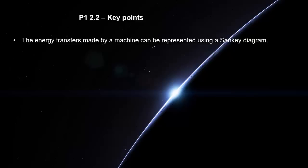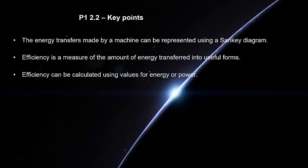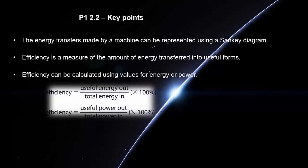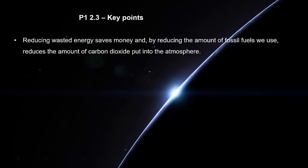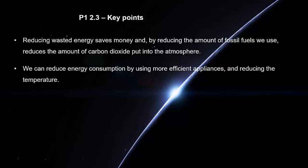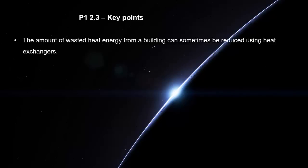The energy transfers made by a machine can be represented using a Sankey diagram. Efficiency is a measure of the amount of energy transferred into useful forms. Efficiency can be calculated using values for energy or power. Efficiency equals useful energy out over total energy in times by 100%, or efficiency equals useful power out over total power in times 100%. Reducing wasted energy saves money and by reducing the amount of fossil fuels we use reduces the amount of carbon dioxide we put into the atmosphere. We can reduce energy consumption by using more efficient appliances and reducing the temperature. The amount of wasted heat energy from a building can sometimes be reduced using heat exchangers.